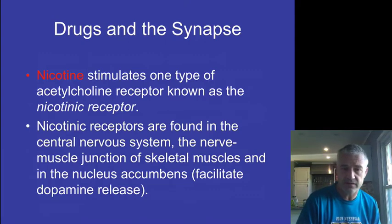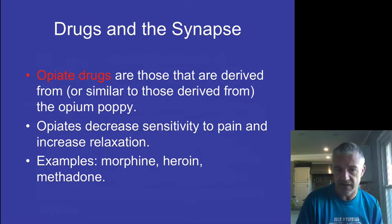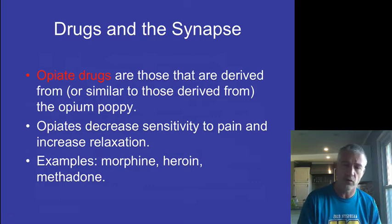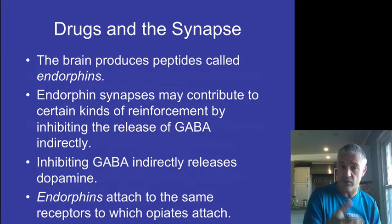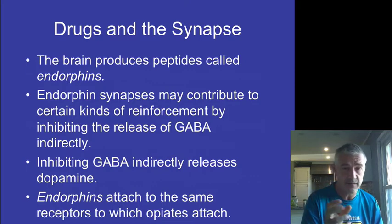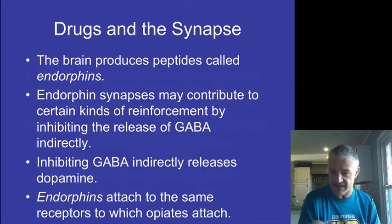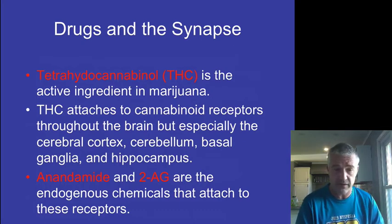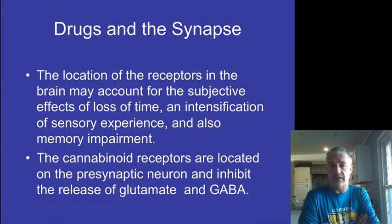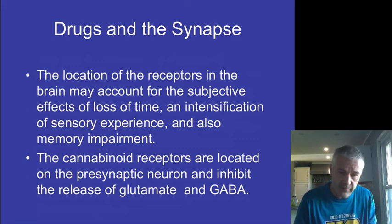Nicotine acts on nicotinic receptors and can facilitate increased dopamine release. Different opiate drugs act on specific receptors to dull pain and increase relaxation — things like morphine and heroin. These act on receptors that are normally there for brain peptides called endorphins, and can indirectly inhibit the release of GABA. Opiates act on those same receptors. THC, the active ingredient of marijuana, acts on endocannabinoid receptors in the brain. Because of where these receptors are located, that's why you can sometimes get an altered sense of time and memory impairment. THC inhibits the release of certain things like glutamate and GABA.